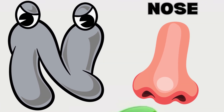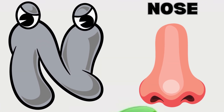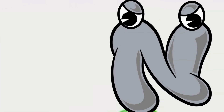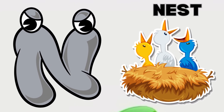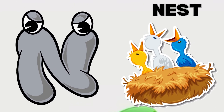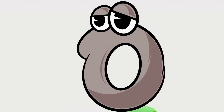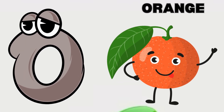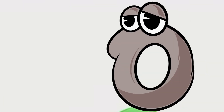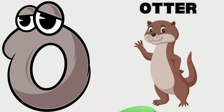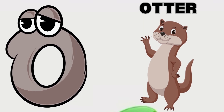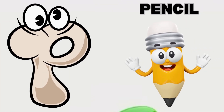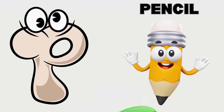N is for Nose. N. Nose. N is for Nest. N. Nest. O is for Orange. O. Orange. O is for Otter. O. Otter. P is for Pencil. P. Pencil.